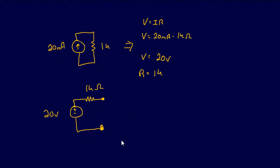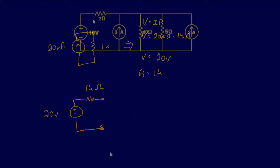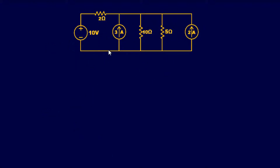Let's jump to another problem to show you what source transformation can really do. For this one we want to simplify down to a single source with a single resistor — we want to find the Thevenin or Norton equivalent for this circuit. A normal person might try mesh analysis, superposition, or other circuit analysis theorems, but we can do this with just source transformation, very easily. Right now I have two current sources and two parallel resistors, plus one series resistor and one voltage source.